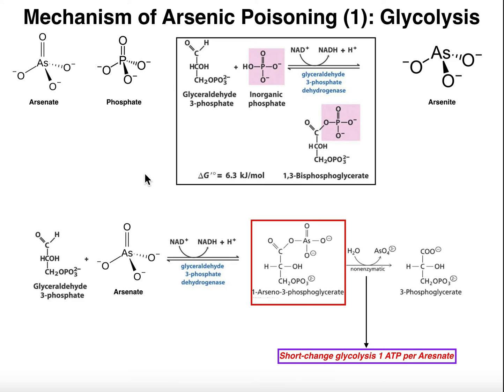Let's first talk about the glycolytic reaction that is most deleteriously affected, and that is the enzyme glyceraldehyde-3-phosphate dehydrogenase. This enzyme is number six in the pathway. It converts glyceraldehyde-3-phosphate with an inorganic phosphate into 1,3-bisphosphoglycerate.